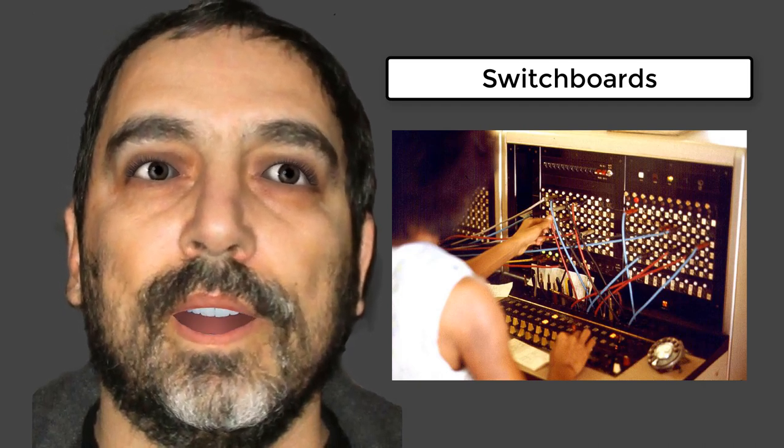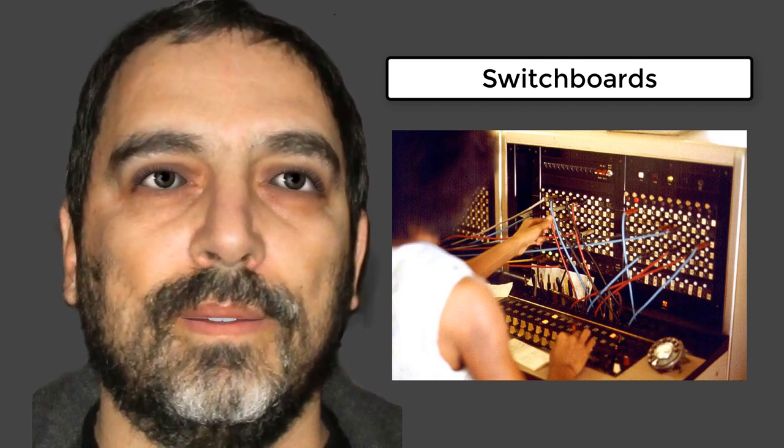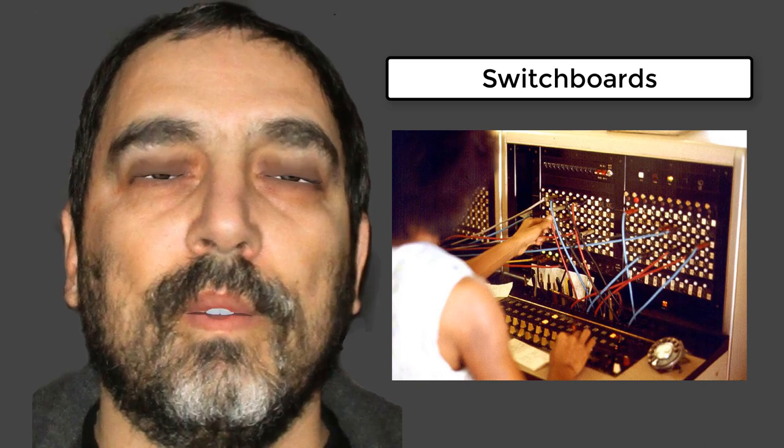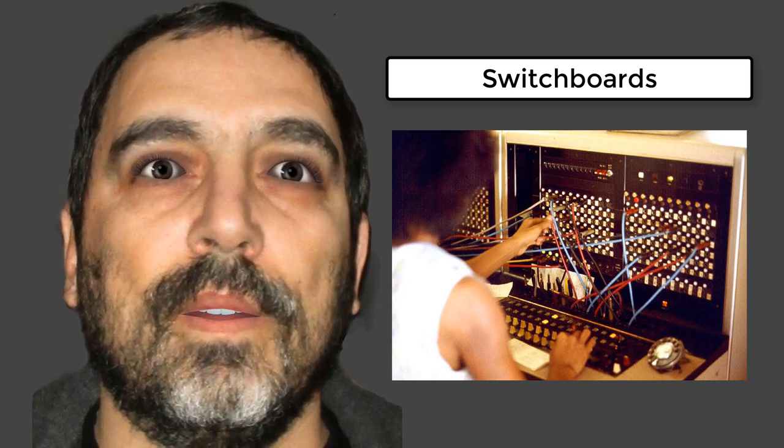Switchboard operators used electrical cords or switches to establish the connections. The first commercial automatic telephone exchange, designed in 1892, used direct current pulse trains generated in the telephone sets of subscribers by interrupting the single-pair wire loop of the telephone circuit.